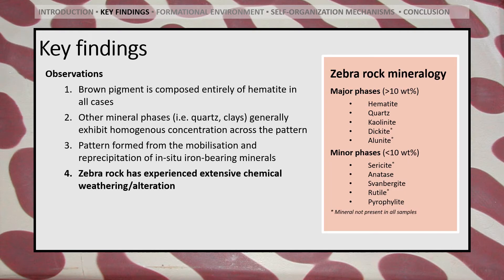Although composition varies significantly between outcrops, the mineralogical assemblage of zebra rock generally consists of a mixture of hematite, quartz, clays, titanium oxides, and aluminium sulfate minerals. Many of these minerals, including dickite, alunite, pyrophyllite, and sericite, are key indicators of acidic alteration, suggesting zebra rock at some point likely underwent extensive surface weathering or hydrothermal alteration.